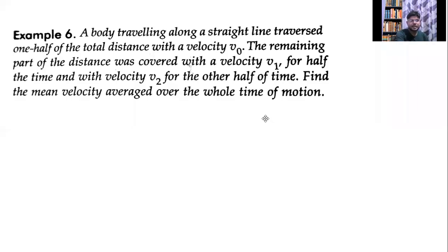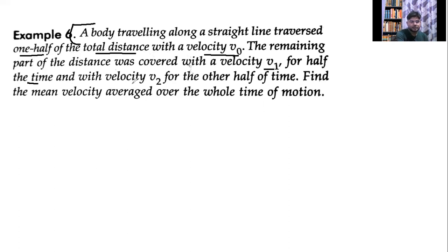Hello everyone. I hope you are doing well. Today we will discuss a question from Chapter 3, Motion in a Straight Line, Class 11. In this question, a body travelling along a straight line traverses one half of the total distance with velocity v0. The remaining part of the distance was covered with velocity v1 for half of the time, and with velocity v2 for the other half of the time. Find the average velocity over the whole time of motion.